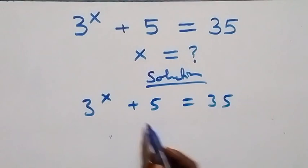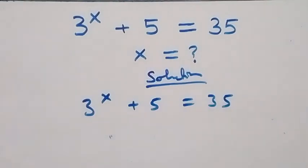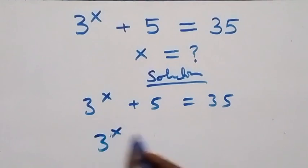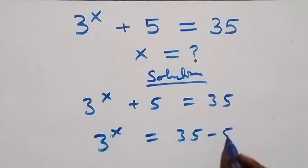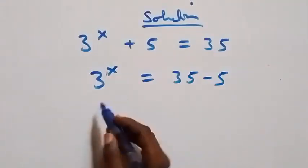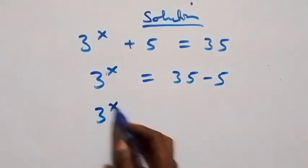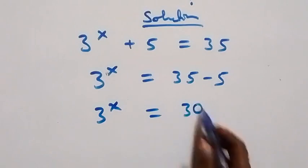Here we take 5 to this side — it becomes minus. That is, we have 3 raised to power x equals 35 minus 5, which gives us 3 raised to power x equals 30.